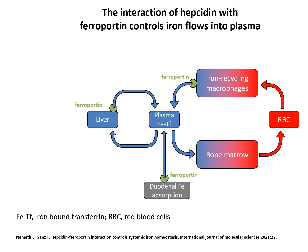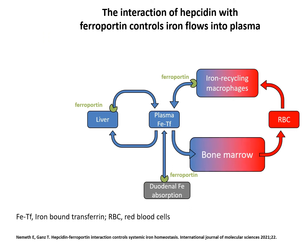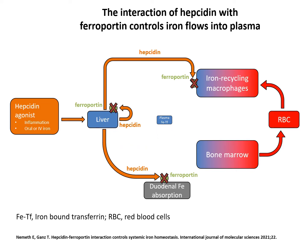Under hemostatic conditions, iron flows from the liver, macrophages, and gut duodenal cells into the plasma, replenishing the iron pool. This is then used by the bone marrow to produce red blood cells. When a hepcidin agonist is detected by the body, the liver upregulates production of the hepcidin peptide. Hepcidin binds to ferroportin, effectively shutting the gate to the body's iron supply. As a result, iron no longer enters circulation, causing the available plasma iron pool to shrink, as the remaining iron is rapidly consumed in the bone marrow and taken up by the liver.